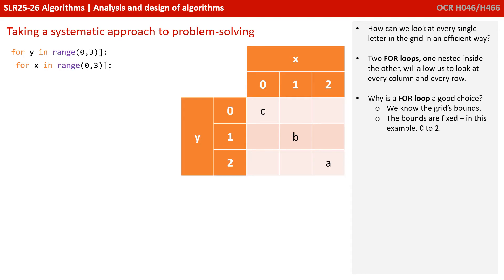So the next thing we need to do is think about how we're going to look at every single letter in the grid. Well, because we want to look at all of the columns and we want to look at all of the rows, then it feels like two for loops would be a good approach. This is because the bounds of the grids are known in advance. We know the size of the grid in X and Y coordinates, so it suits well for a loop.